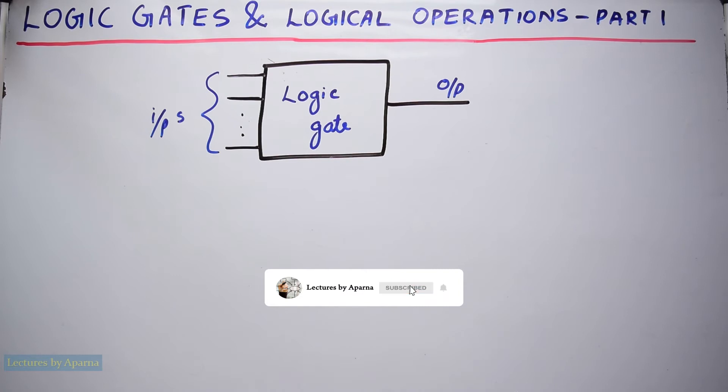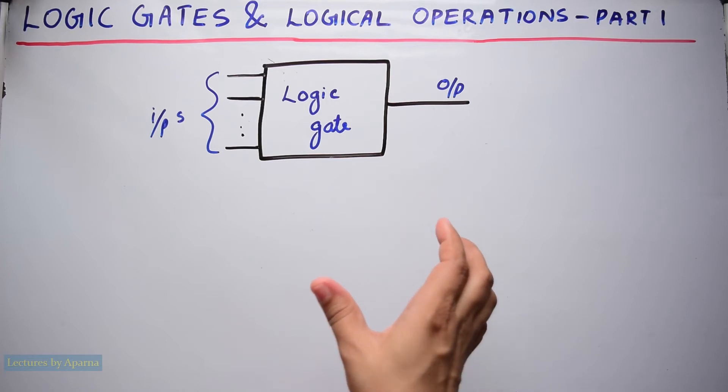Logic gates are the basic digital electronic circuits that are used for implementing simple logical operations like OR operation, AND operation, NOT operation, etc. They have one or more inputs and a single output. These are the building blocks of any digital system.